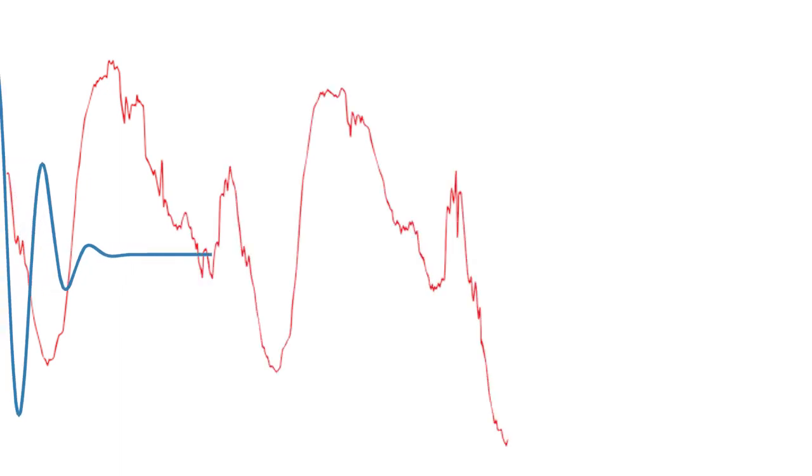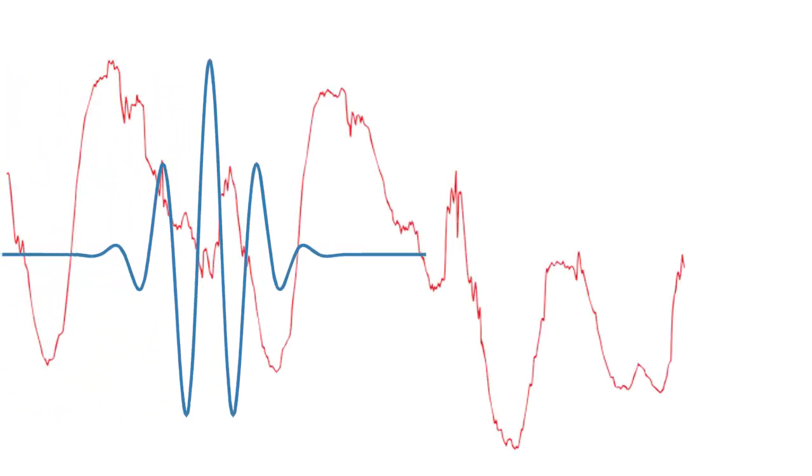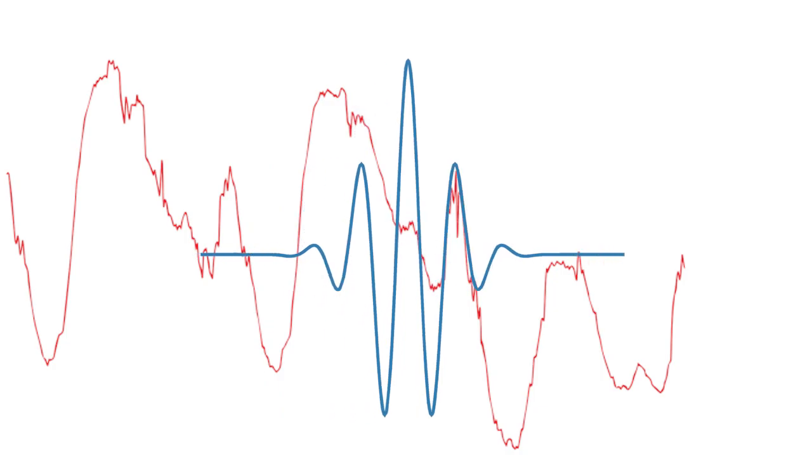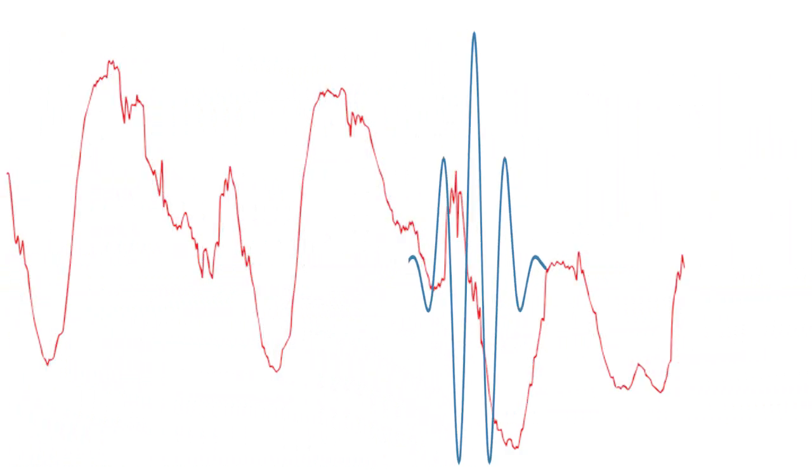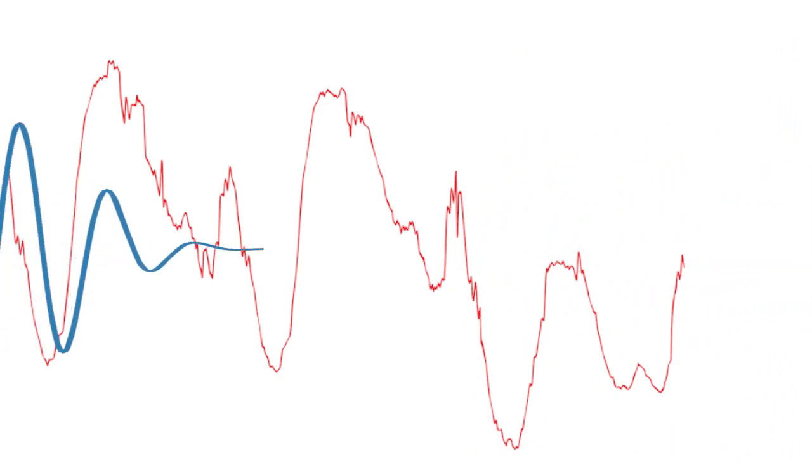Now, each scaled wavelet is shifted in time along the entire length of the signal and compared with the original signal. You can repeat this process for all the scales resulting in coefficients that are a function of wavelet scale and shift parameter.